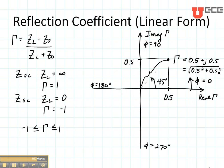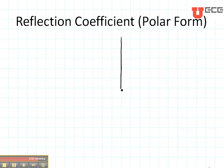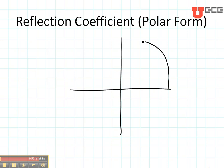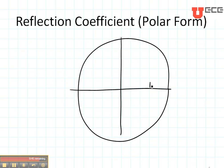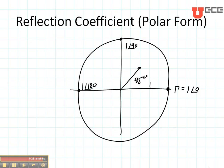That's how we plot our reflection coefficient. In polar form, the maximum magnitude is 1, so I draw a circle with a radius of 1. I can plot the reflection coefficient at 1 with a phase of 0, at 1 with a phase of 90, and at 1 with a phase of 180, and so on. For the previous example — magnitude one-half at a phase of 45 degrees — there is a corresponding location on this polar plot.